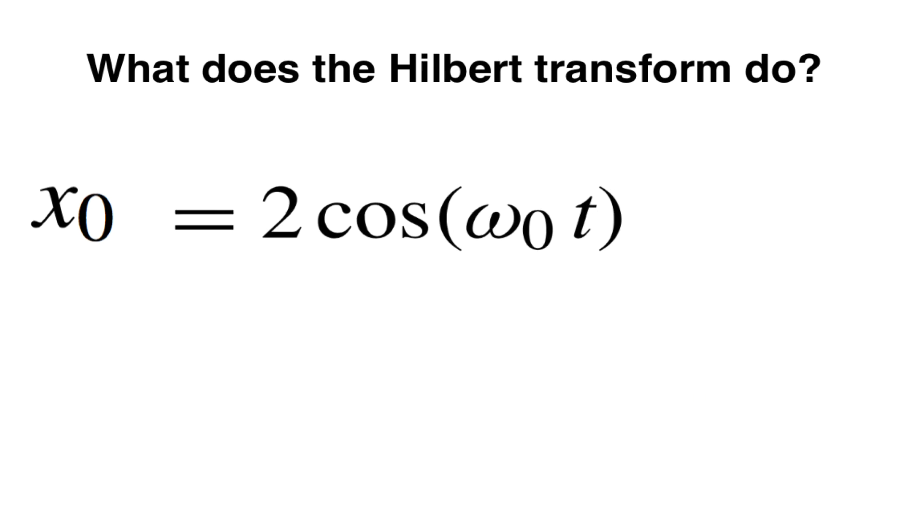Now if you've taken calculus, you'll know from Euler's formula that we can write x0 as equal to the sum of two complex exponentials, e to the i omega0 t plus e to the minus i omega0 t, where i is the square root of minus 1.